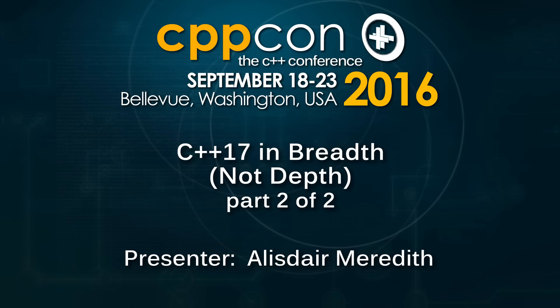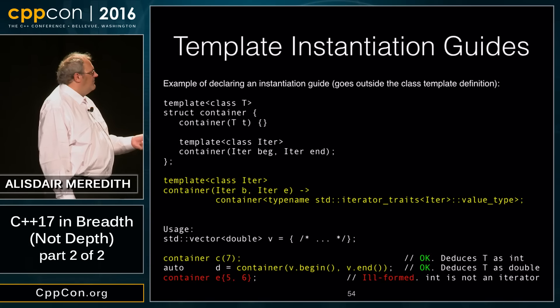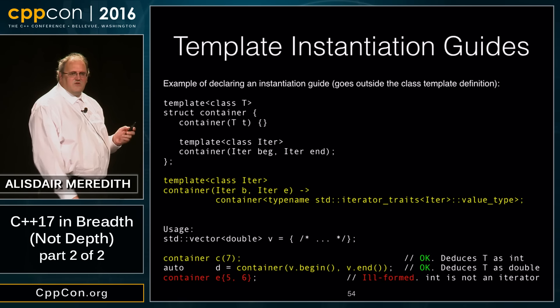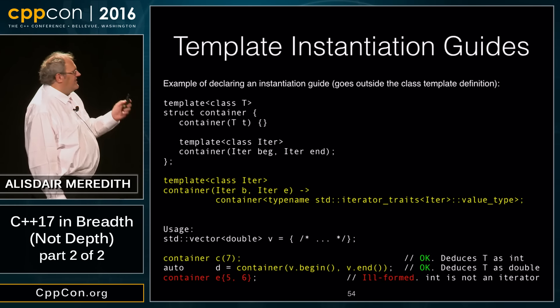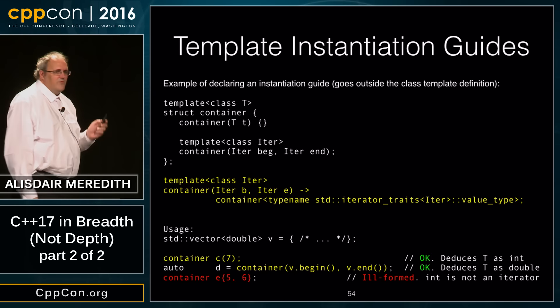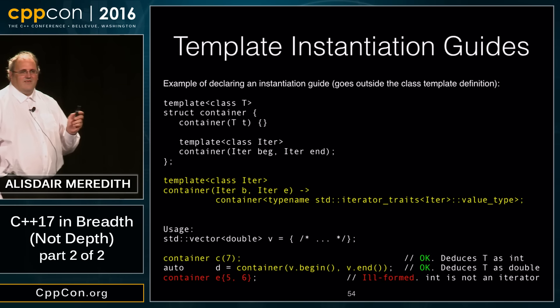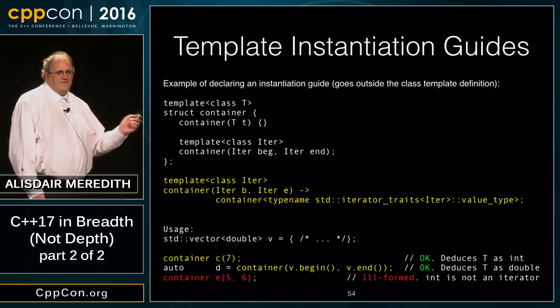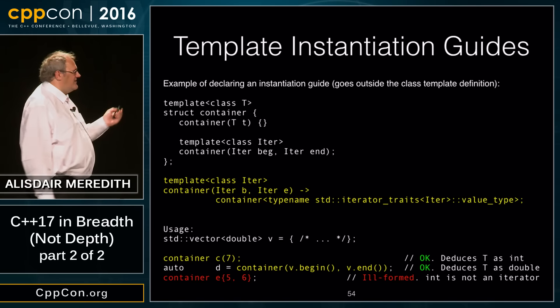We finished with the template instantiation guides — a nice example of how we might use them with vector. An interesting point is that we didn't actually get this early enough for the standard library to add this to vector.